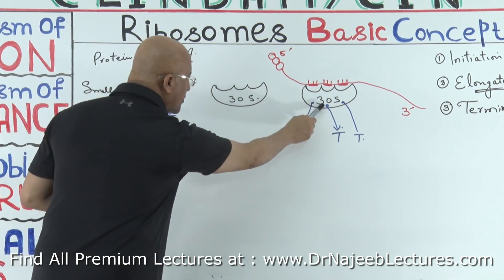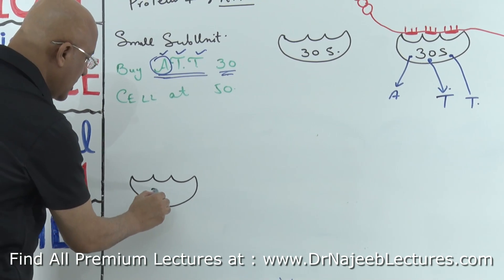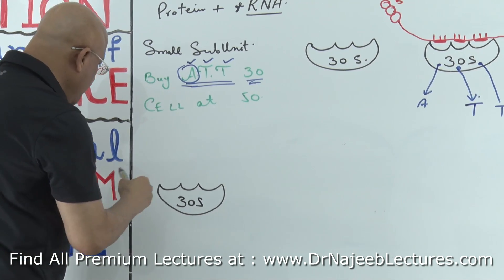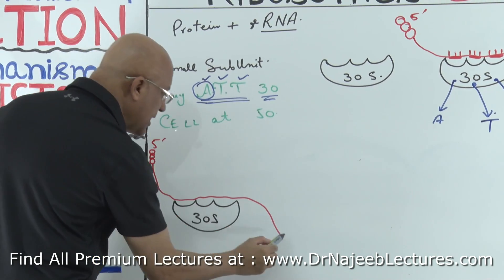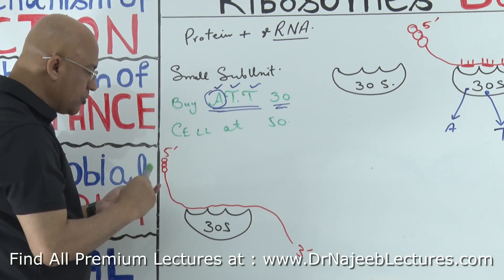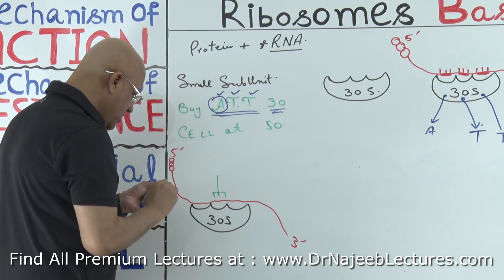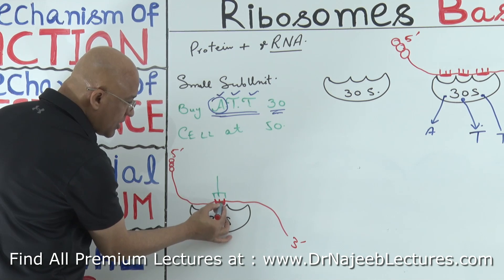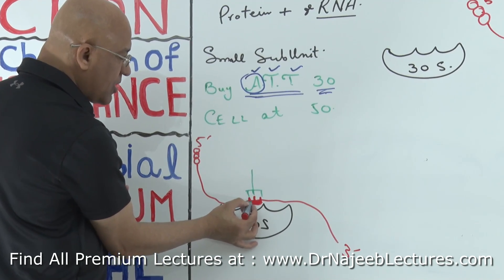The initiation complex — yes, this is the 30S, the smaller subunit of the ribosome. Here is your messenger RNA, 5 prime and 3 prime. And here should be a transfer RNA. The codon from where protein synthesis initiates is called the initiating codon.